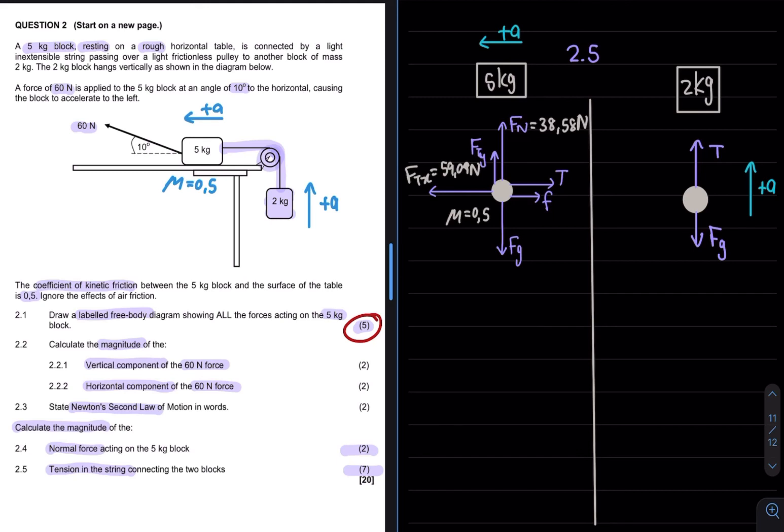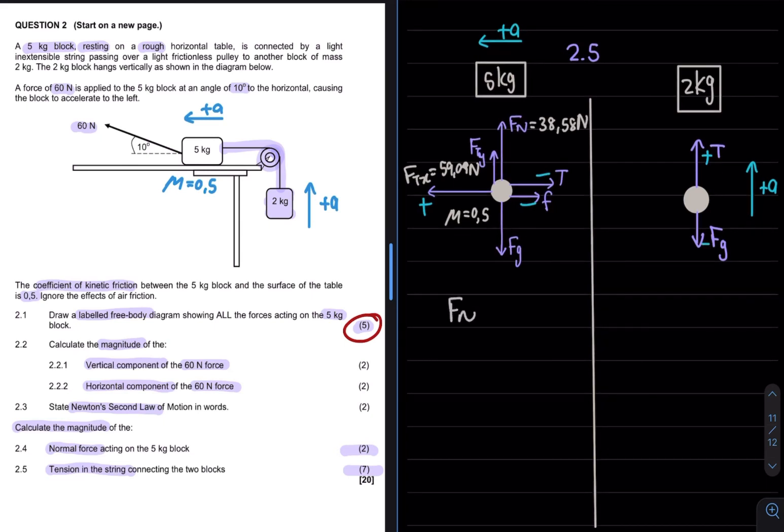My direction of acceleration was said to be to the left and upwards. Therefore I can take the vectors to the left and upward positive and the vectors to the right and downward as negative. I can now apply Newton's second law for both bodies.